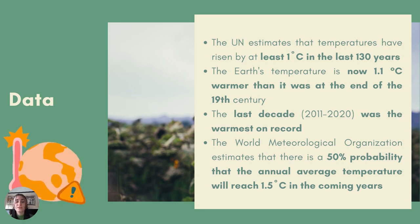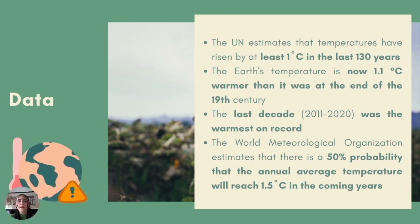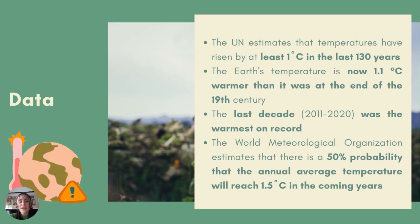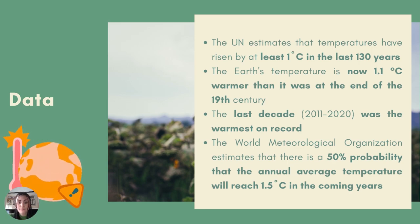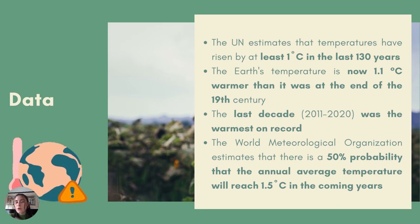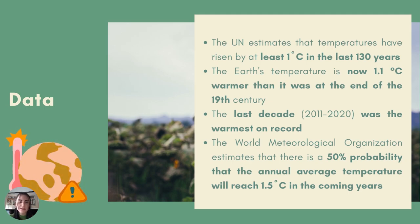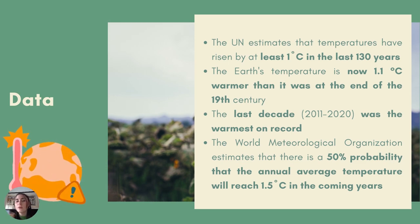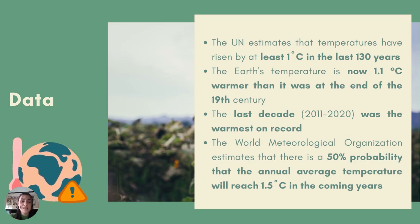The United Nations estimates that temperatures have been rising by at least one degree in the last 130 years. Specifically, the Earth's temperature is now 1.1°C warmer than it was at the end of the 19th century. The last decade was the warmest on record. This number of 1.1 degrees may seem small, but it is already a great threat to the planet and to all human beings. We must also remember that this figure is a global average, which means that some areas are warming much faster, as is the case in the Arctic.